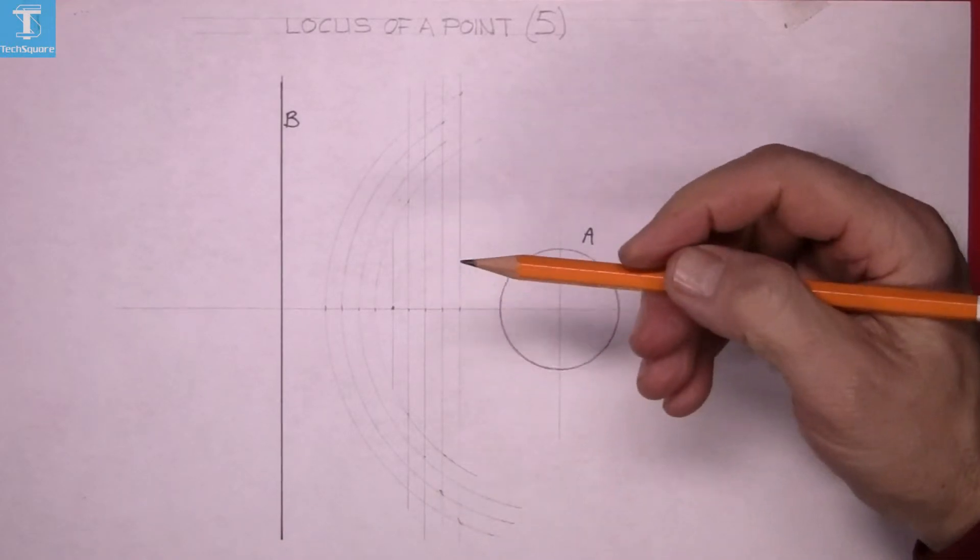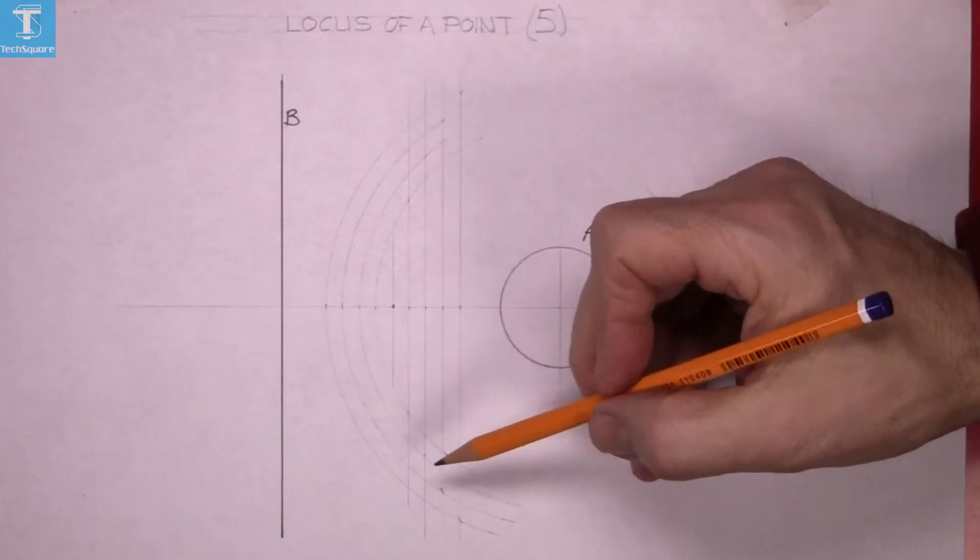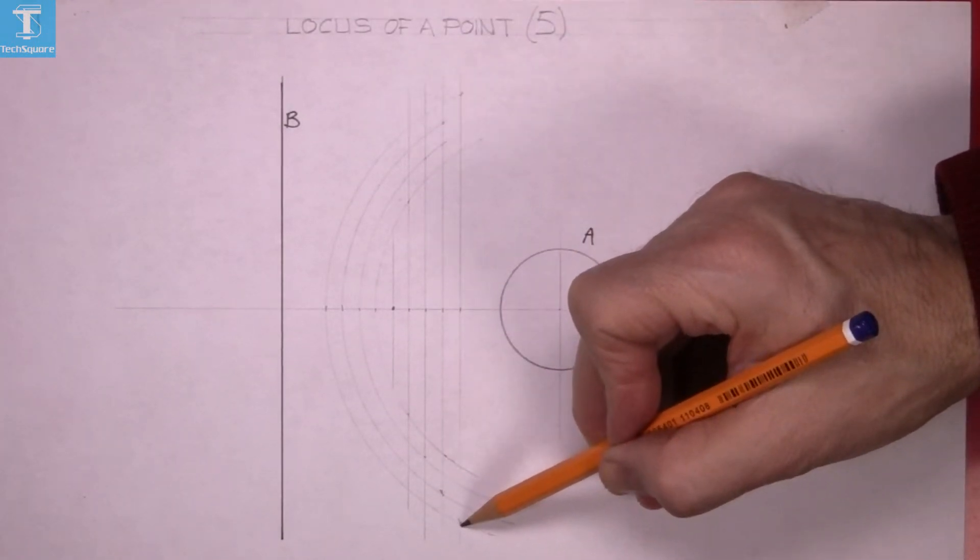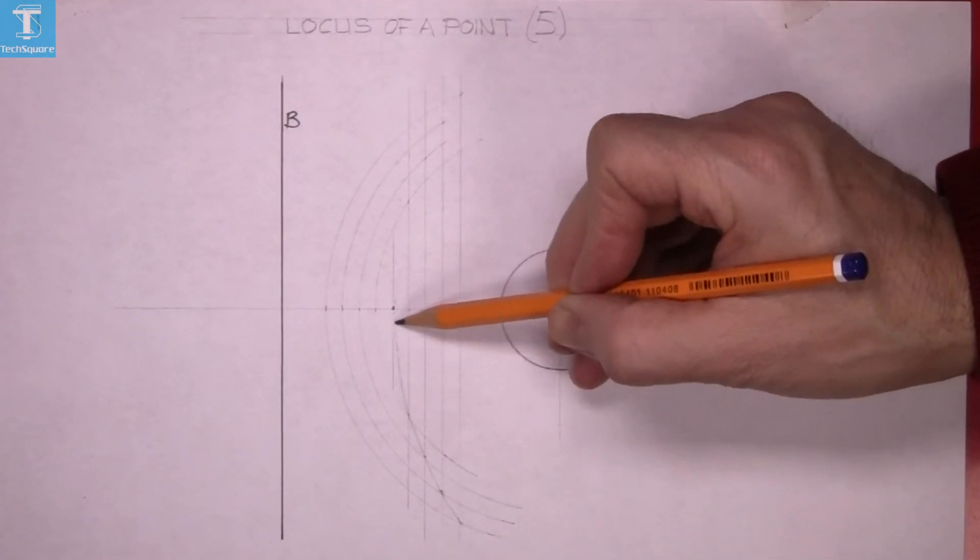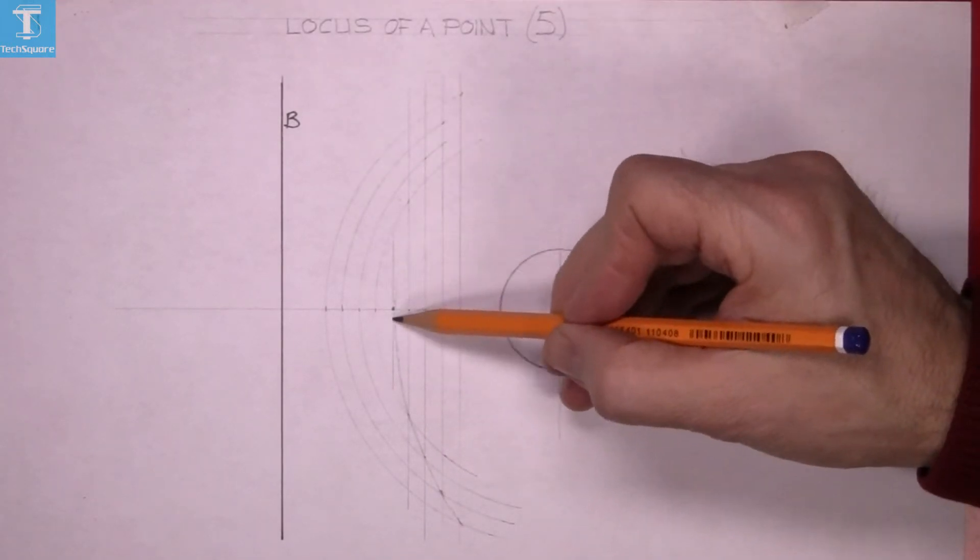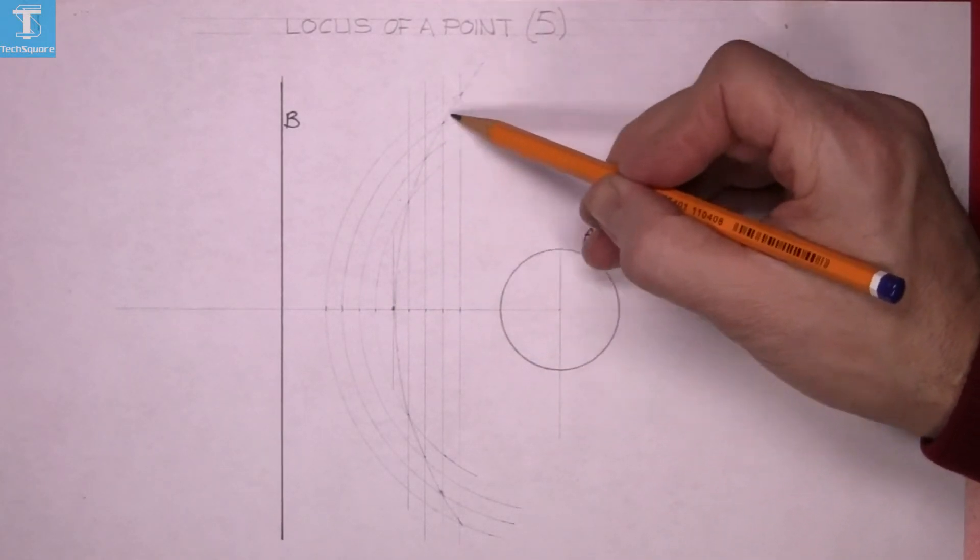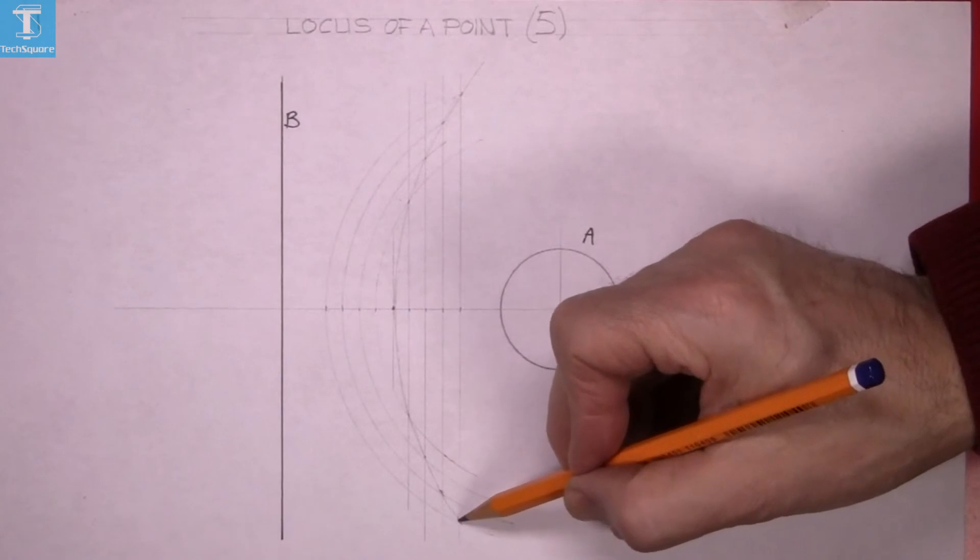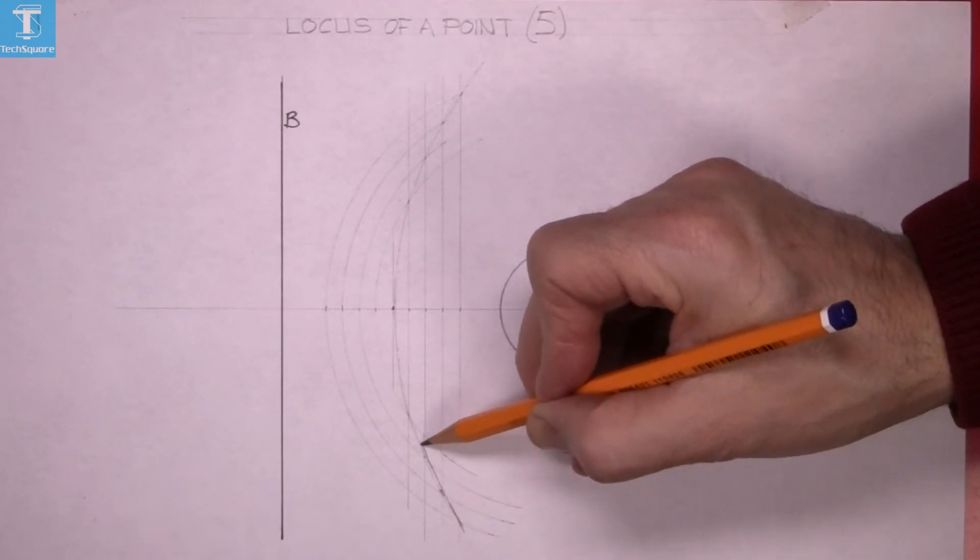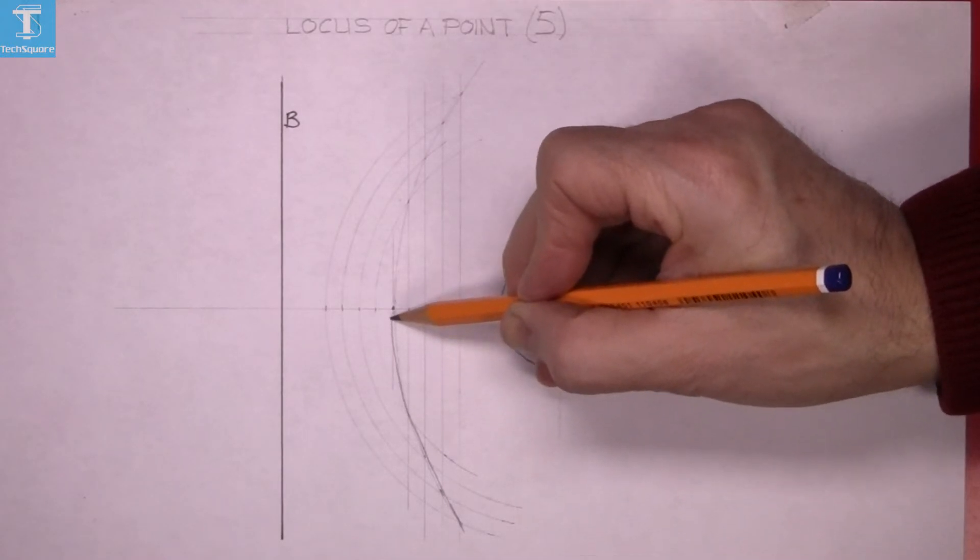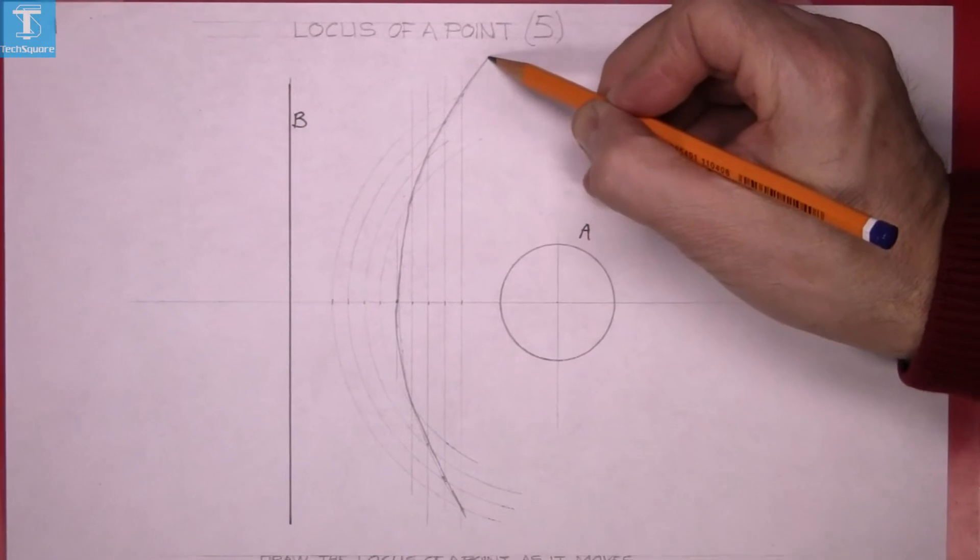And then it's a freehand curve through those points. So freehand curve, and that's the locus of the point.